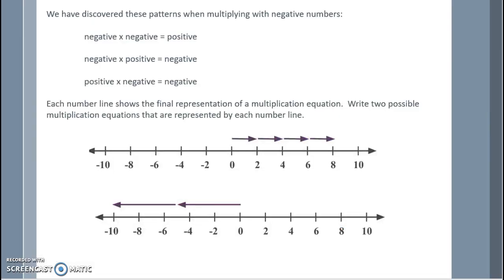We have discovered these patterns when multiplying with negative numbers: a negative times a negative gives us a positive result. A negative times a positive or a positive times a negative gives a negative result. Each number line shows the final representation of a multiplication equation. Write two possible multiplication equations that are represented by each number line.